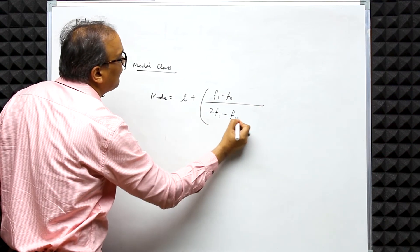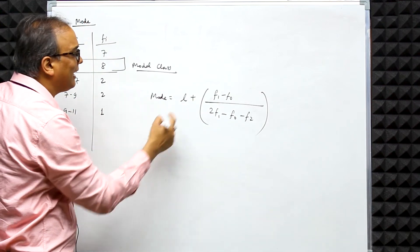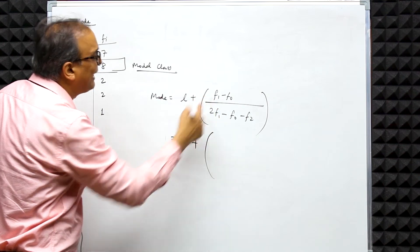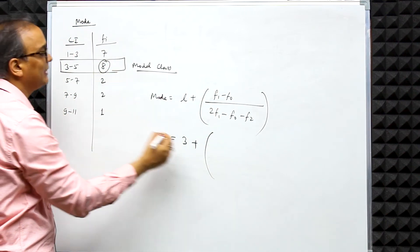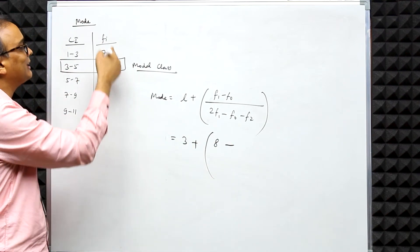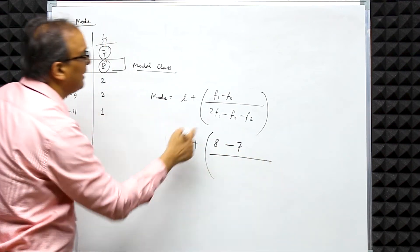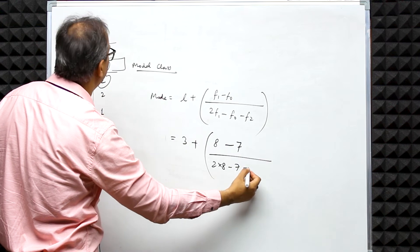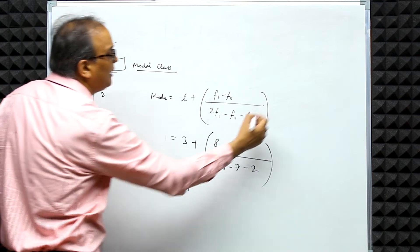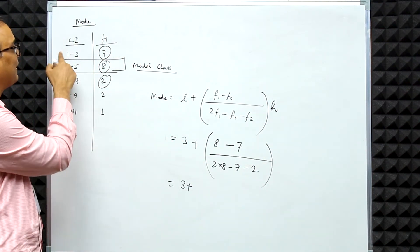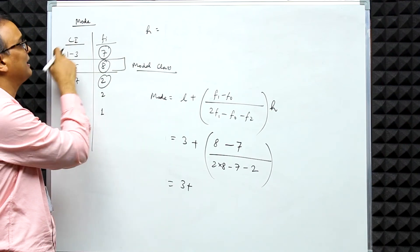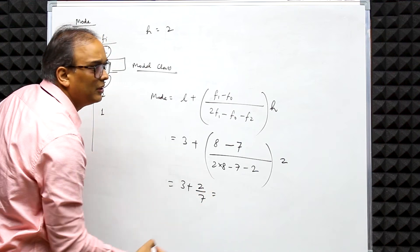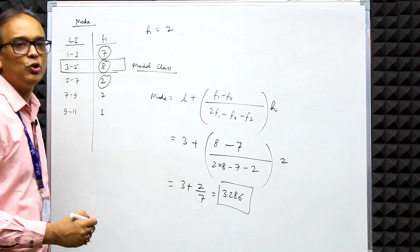The formula for Mode is: L + [(F1 − F0) / (2F1 − F0 − F2)] × h, where L = lower limit of modal class = 3, F1 = frequency of modal class = 8, F0 = frequency of class before modal class = 7, F2 = frequency of class after modal class = 2, and h = class size = 2. So Mode = 3 + [(8−7) / (2×8 − 7 − 2)] × 2 = 3 + (2/7) = 3.286.